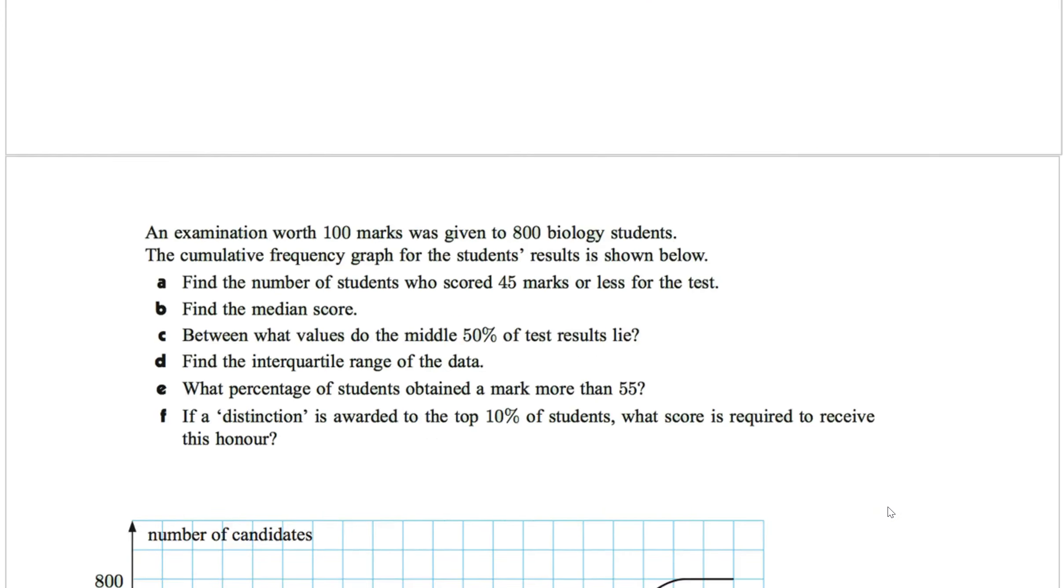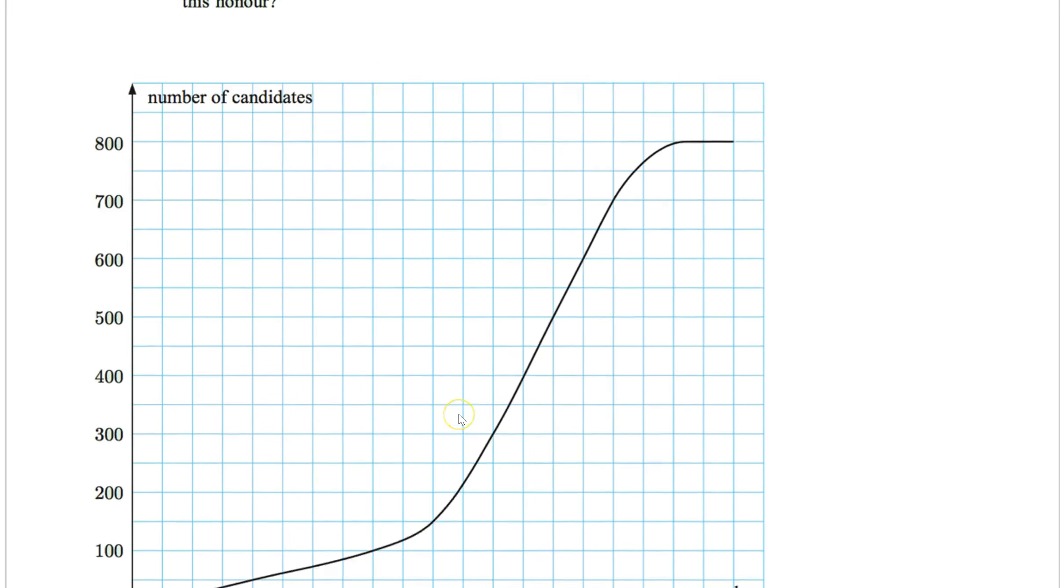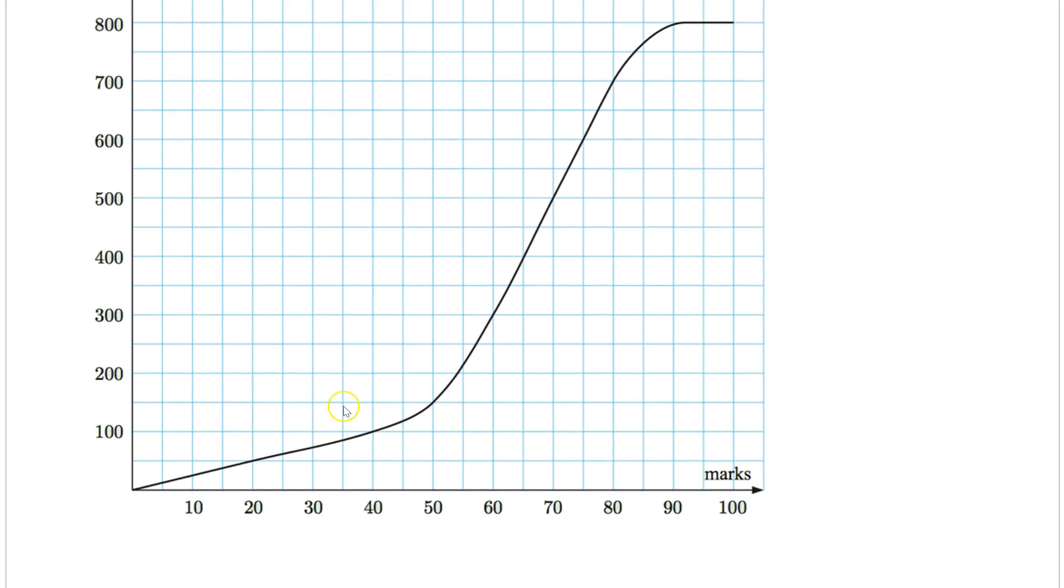Let's go to our final example for this lesson. An examination worth 100 marks was given to 800 biology students. The cumulative frequency graph of the student's results is shown below. Find the number of students who scored 45 marks or less for the test. So again, key thing right there, or less. That means once I find it, I'm going to go up and across and I go from the bottom. Or less is from the bottom. Greater than is from the top.